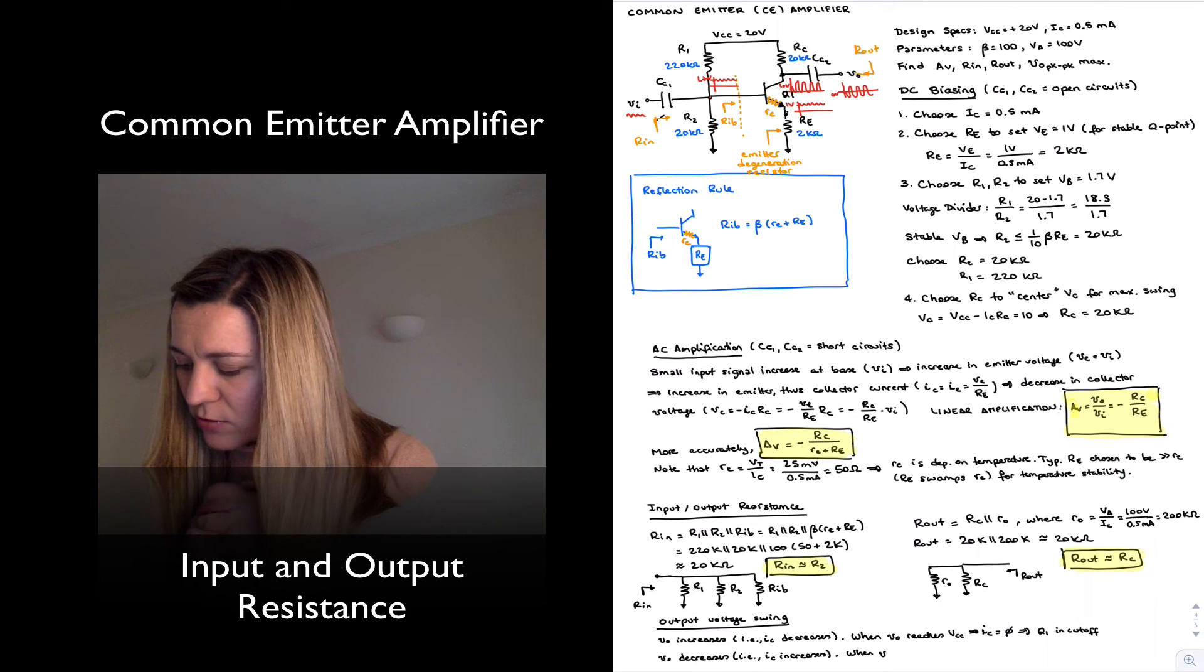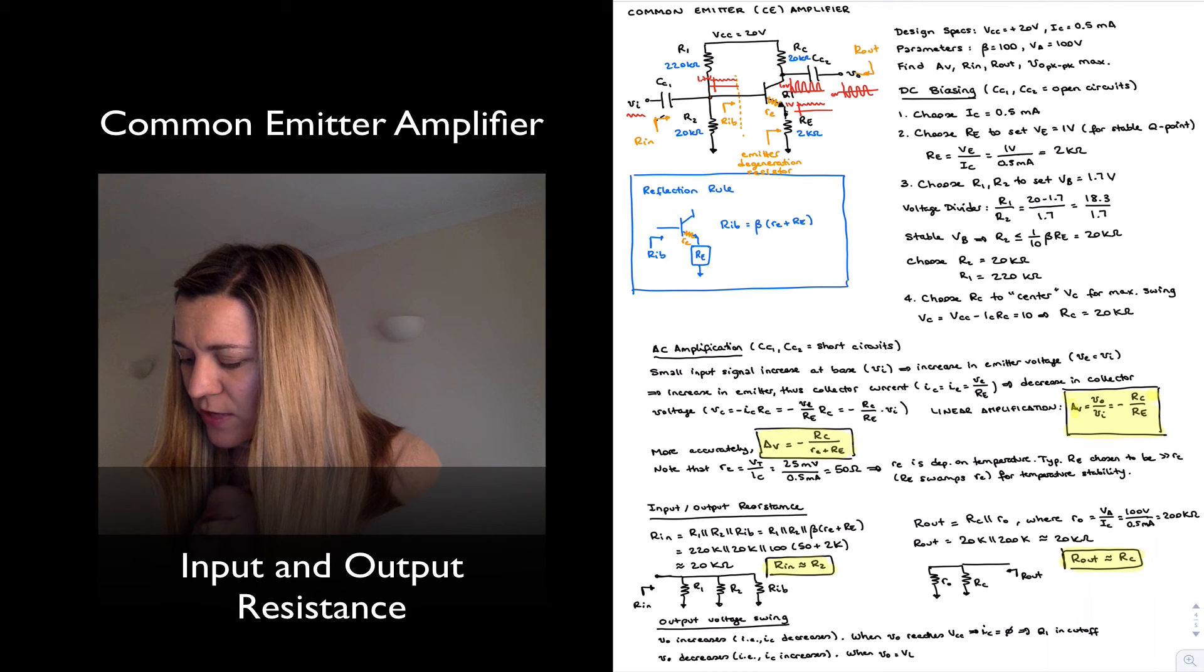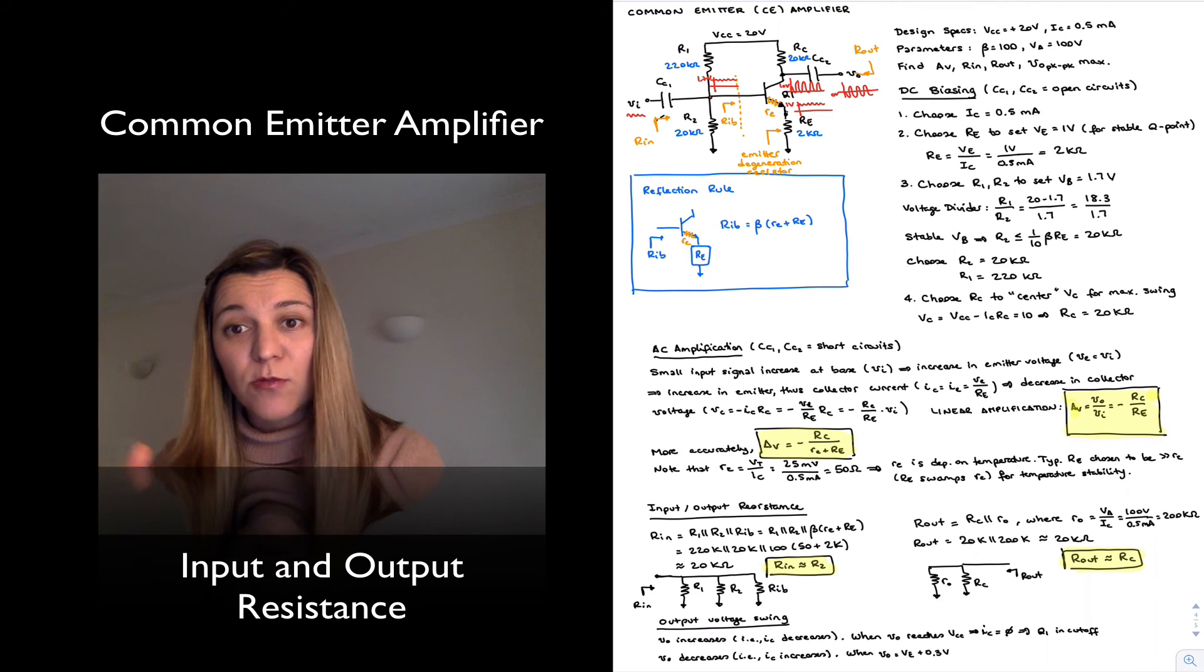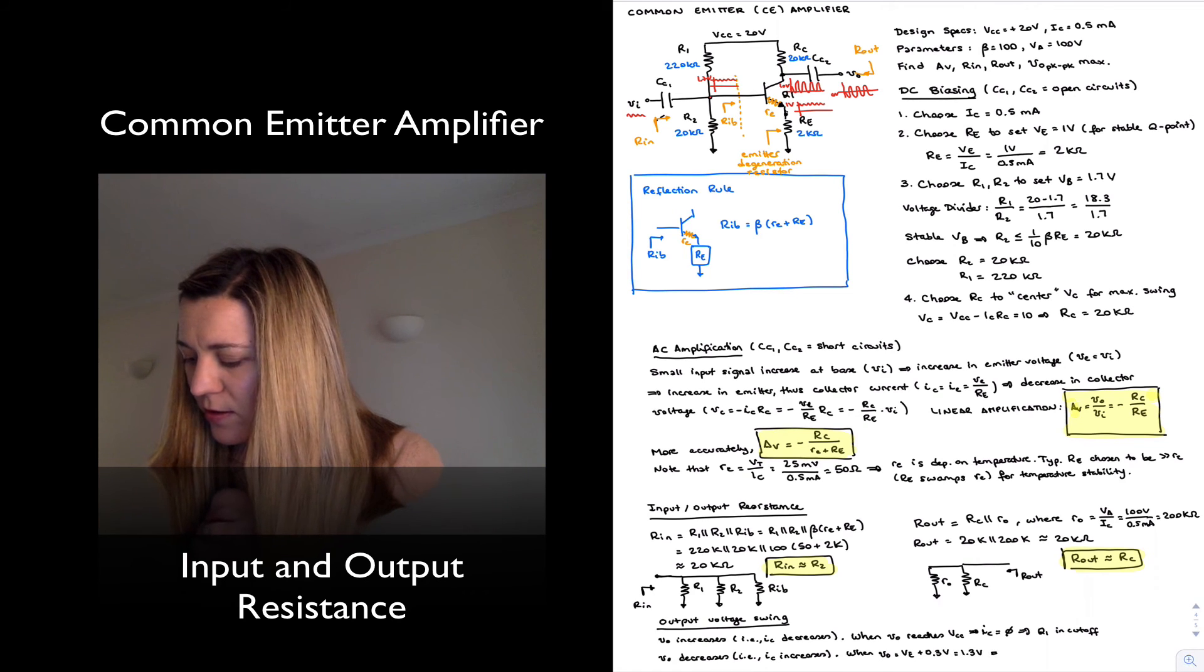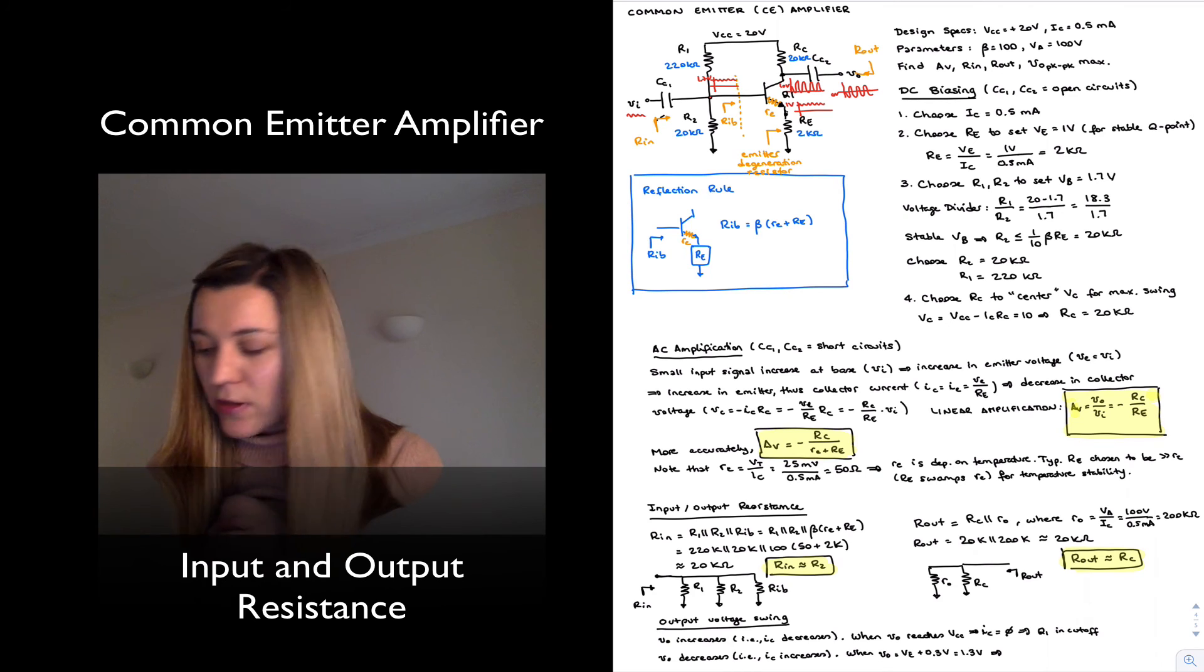And so when Vout is equal to one volt, which is Ve, plus the 0.3 volts Vce that will keep the transistor out of saturation—in this case, that's 1.3 volts—then that means that Q1 is on the verge of saturation.